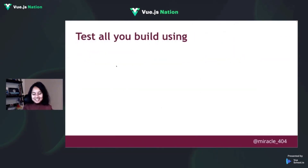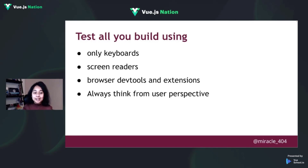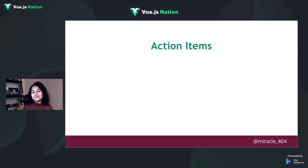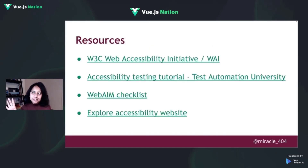To summarize: test everything you build using keyboards, screen readers, browser dev tools, and extensions. Whenever you are creating something, always think from the user's perspective and test for accessibility from the very start so you find issues earlier and can fix them. As an action item, test whatever you're working on today using these tips and check the linked resources to read more about accessibility.